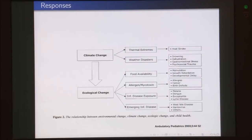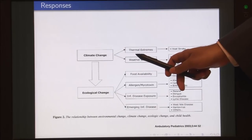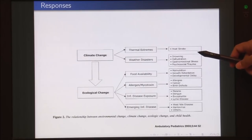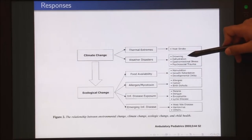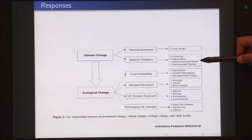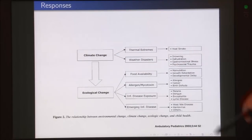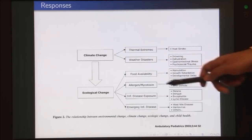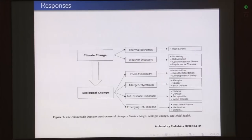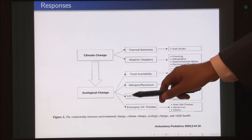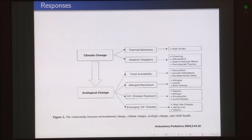Other kinds of responses observed in wildlife include thermal extremes leading to heat strokes, mortality because of heat strokes, weather disasters leading to drowning or dehydration of animals, gastrointestinal illnesses, and psychosocial trauma. This paper dealt mostly with human health, but all these results can also be directly seen in animals. If climate change results in ecological changes altering the food available to animals, that might result in malnutrition, growth retardation, developmental delays, or increased allergens and mycotoxins being produced.